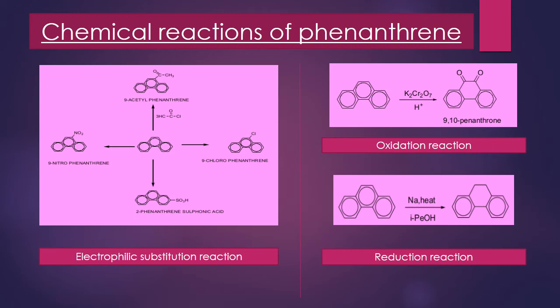There are 5 resonating structures for the intermediate formed, out of which 3 have 2 benzene rings intact, making them stable. Phenanthrene also undergoes addition reactions when a nucleophile attacks.